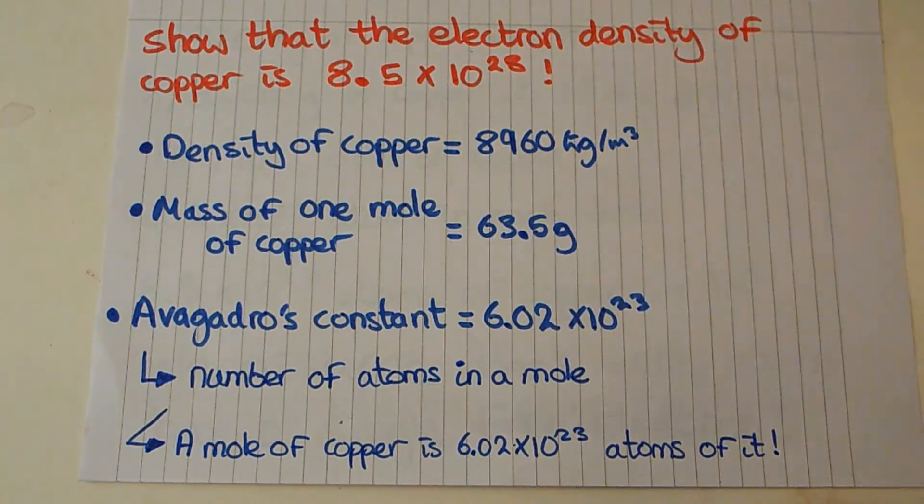A mole of copper is therefore 6.02 times 10 to the 23 atoms of it. That's all a mole is, it's 6.02 times 10 to the 23 atoms of whatever the mole is - so a mole of carbon, again, 6.02 times 10 to the 23 atoms of carbon. Again if you want to have a go at this pause the video because I'm now going to show you the answer.